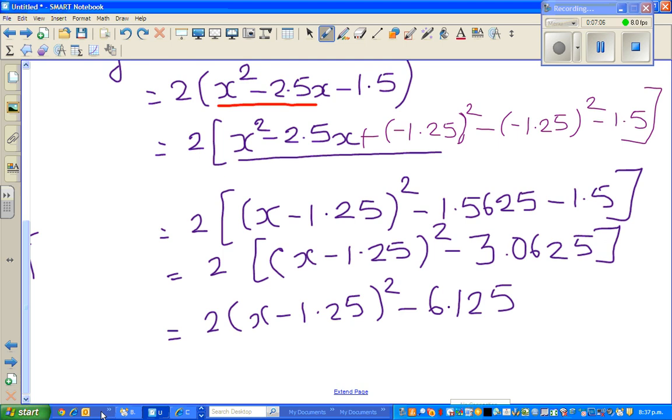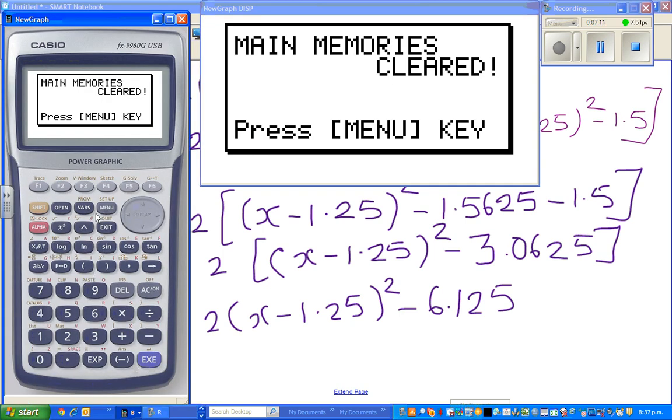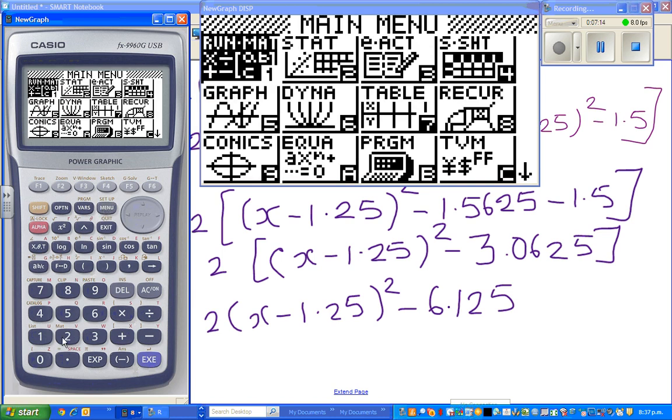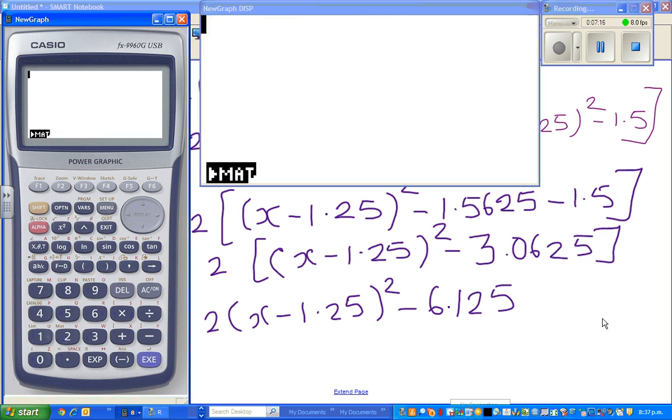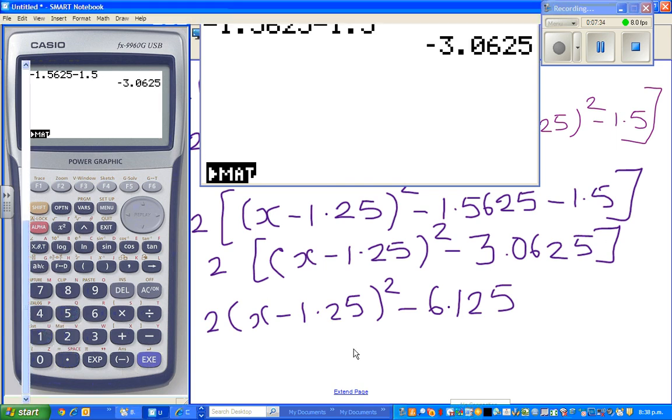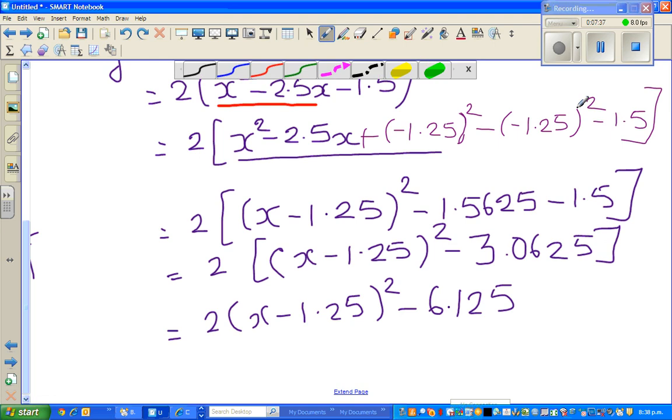I'll show you on the calculator. Always check your working. So I'll do minus 1.5625 minus 1.5. That is minus 3.0625. Now this has become, or this is the vertex form.